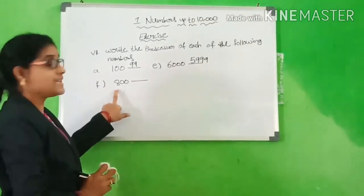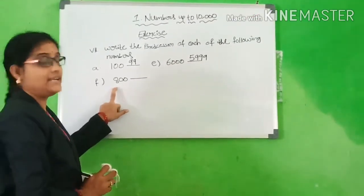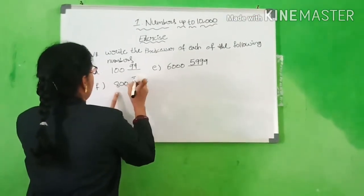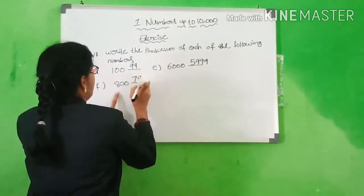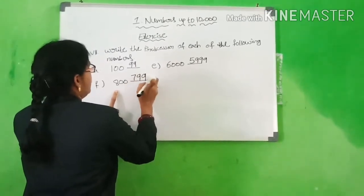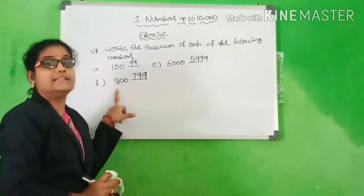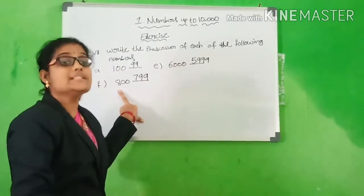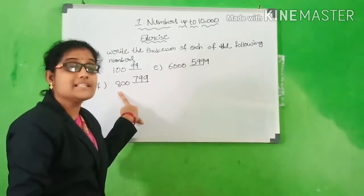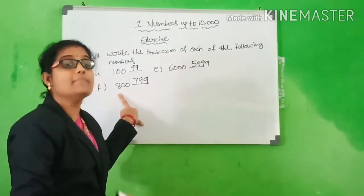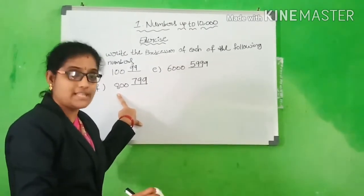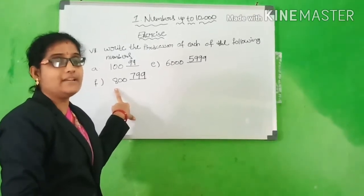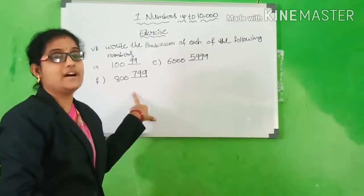What is the predecessor of 8000? 7999. This number's predecessor — numbers before it. Predecessor. Note this one.